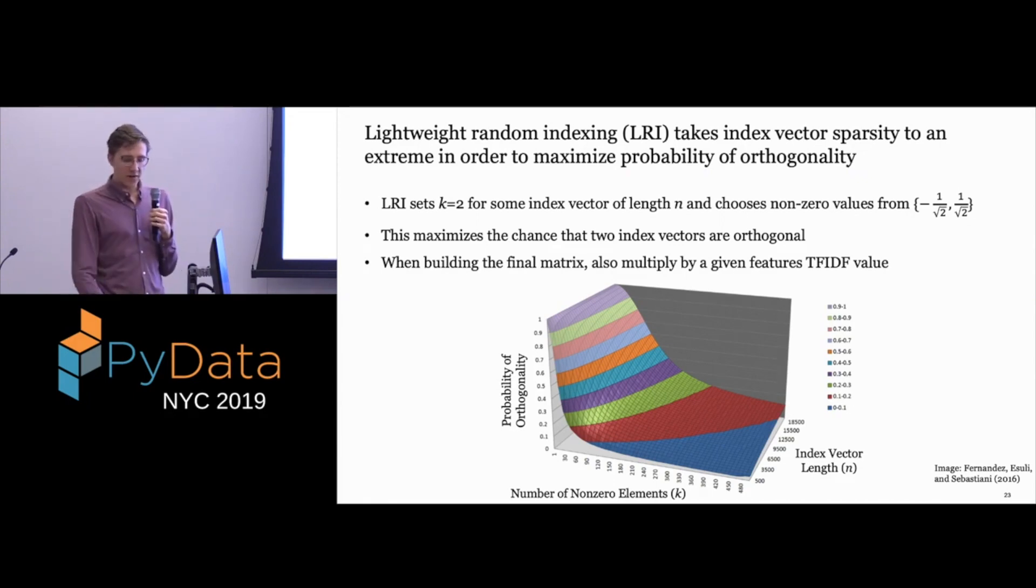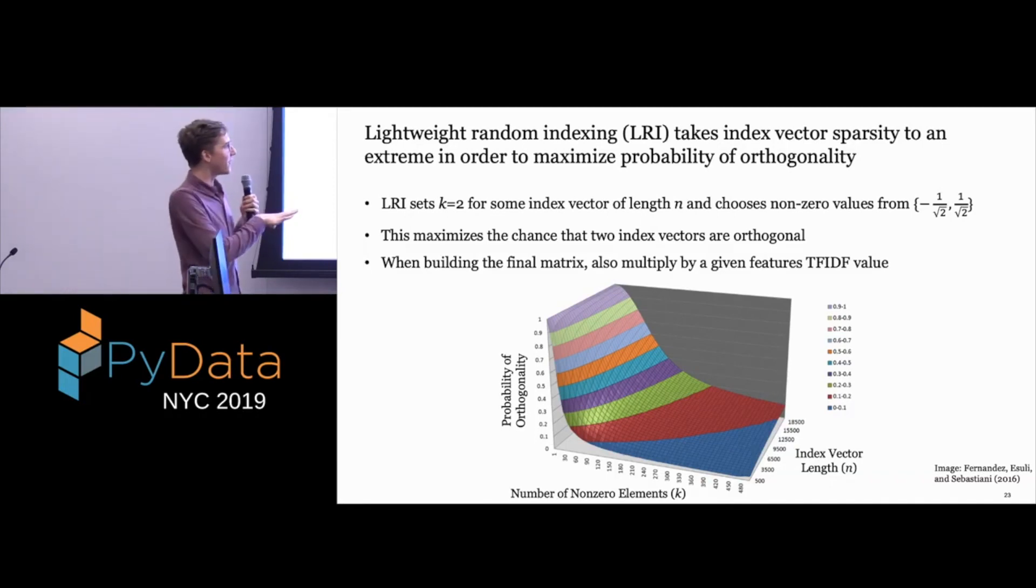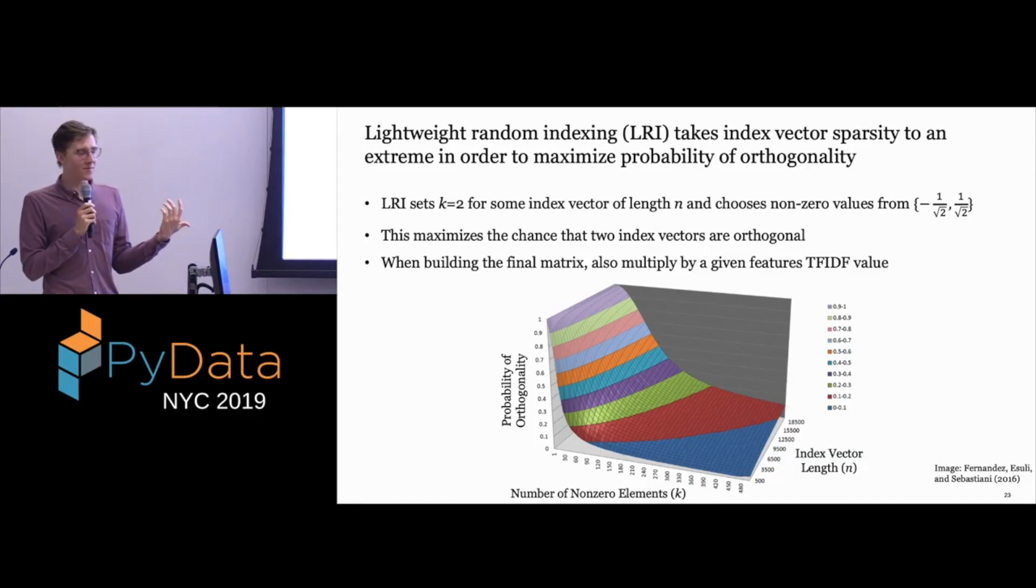And then when we're building our final matrix, we'll also multiply our index vector by the TF-IDF value for any word. This graph, other than me just liking it, this is the probability that any two pairwise random index vectors will be orthogonal to each other based off of how many non-zero values they have and then how long they are on the y-axis. Basically, this is just saying that the probability is maximized when you use one element would be best, but you have to use two elements because if you just use one, you'd just be randomly permuting your feature space, which is not super helpful.